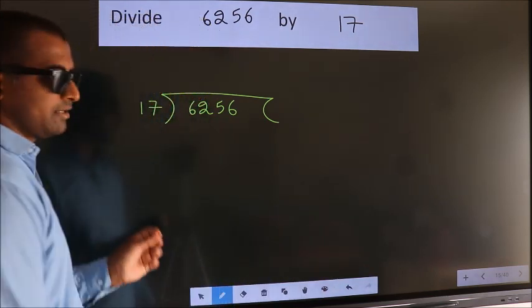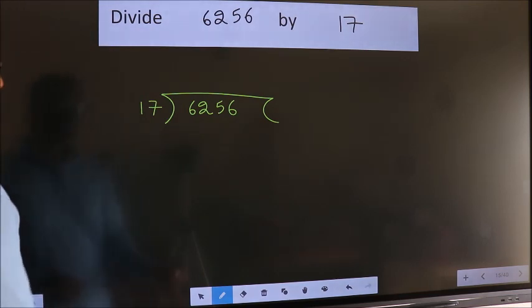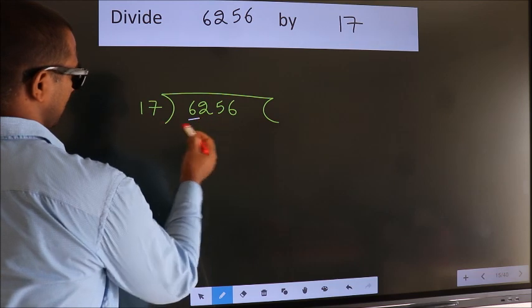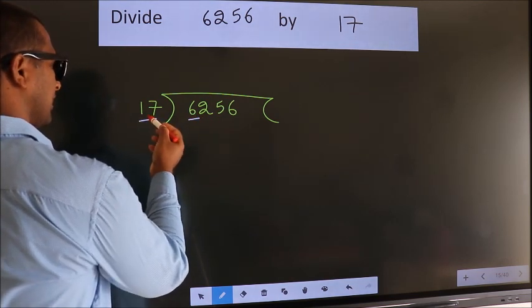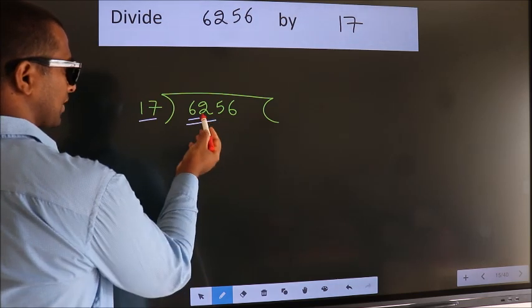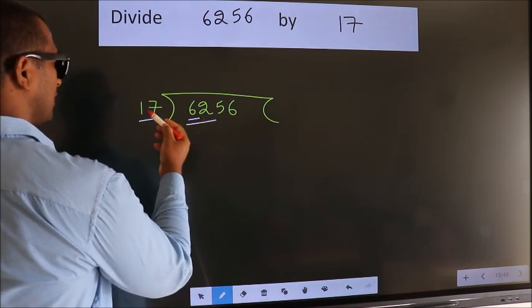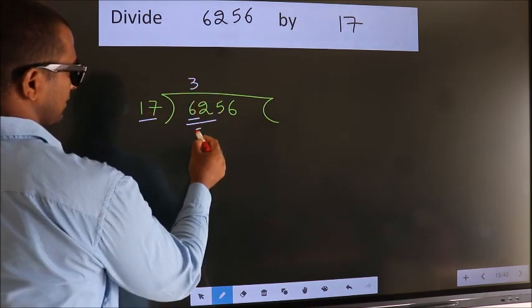This is your step 1. Next, here we have 6. Here 17. 6 is smaller than 17, so we should take 2 numbers, 62. A number close to 62 in the 17 table is 17 threes, 51.